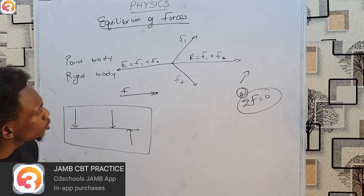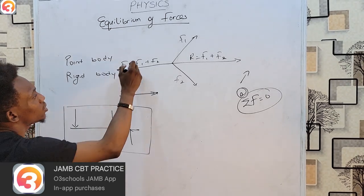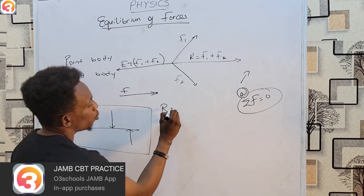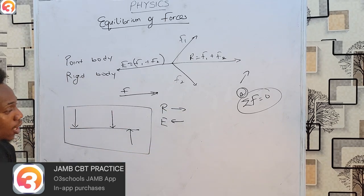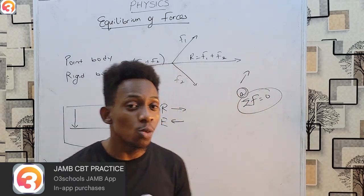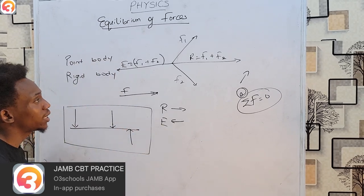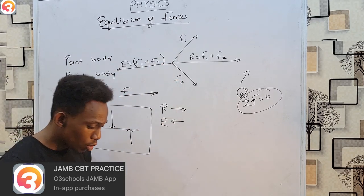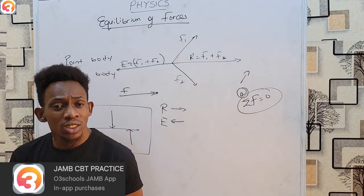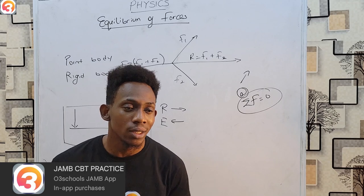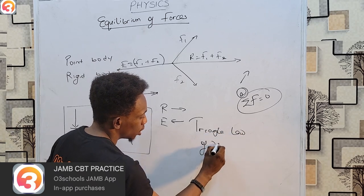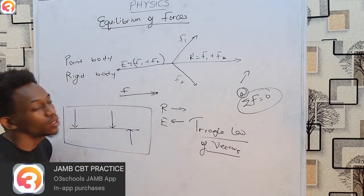The resultant and equilibrant are almost the same thing. The only difference is that while having the same magnitude, they act in opposite directions — if my resultant is to the east, my equilibrant must be to the west. Equationally, you can solve for equilibrants in the same method you solve resultants, but more commonly, rather than using the parallelogram of vectors, you prefer to use the triangle law of vectors when solving for equilibrants.